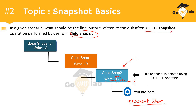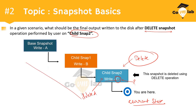If the data is being retained, then which disk will this data be written to? Because ultimately we have triggered a delete operation. One thing is certain: this snapshot will be deleted from the snapshot chain tree. But we need to understand what happens to the data the user wrote on that snapshot disk.